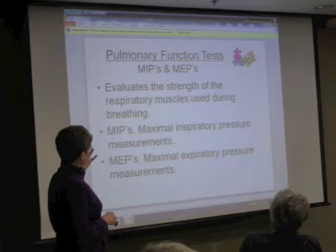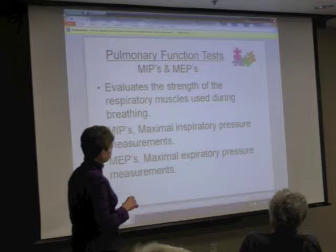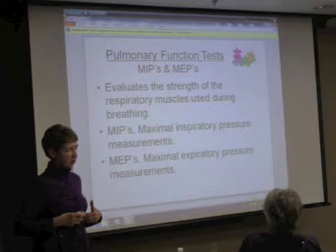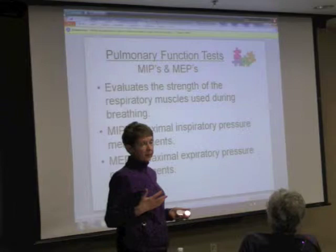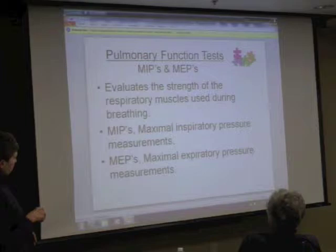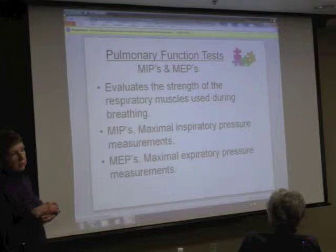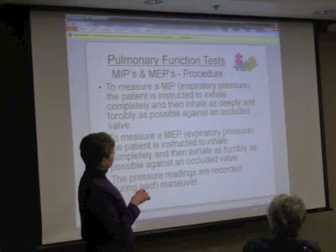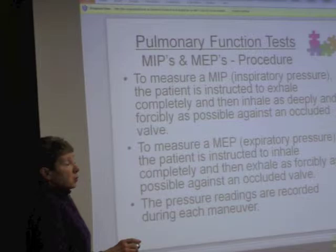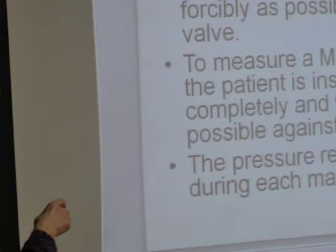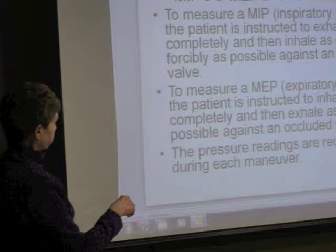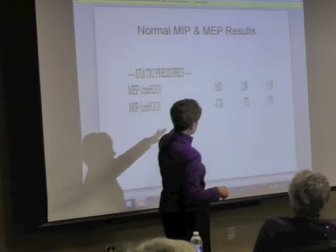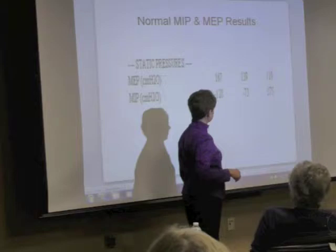Muscle pressure tests actually measure the strength the muscles in your chest exert when you're breathing. Most of us aren't aware that chest muscles are actively helping us breathe, but certain diseases cause those muscle pressures to become weak. We measure inspiratory pressure — how hard you can suck in — and expiratory pressure — how hard you can blow out. We do three or four of each maneuver. My muscle pressures are extremely good: expiratory was 167% of predicted, and inspiratory was 175% of predicted. We'll talk more later about what diseases cause abnormalities in these values.